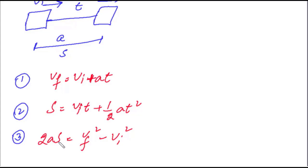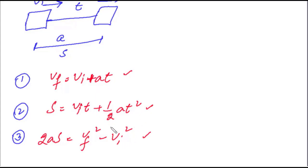اگر آپ نے distance find کرنا ہے اور آپ کو final velocity نہیں دی گئی تو آپ second equation کا استعمال کر سکتے ہیں، کیونکہ third equation میں distance تو ہے لیکن final velocity نہیں ہے۔ مطلب یہ ہے کہ یہ تینوں equations اگر آپ کو یاد ہیں تو جو بھی data given ہوگا اس کی مدد سے آپ مناسب equation کا استعمال کر کے unknown چیز کو easily calculate کر سکتے ہیں۔ یہ آپ کے پاس simple equations of motion ہیں جنہیں ہم uniformly accelerated motion کہتے ہیں۔